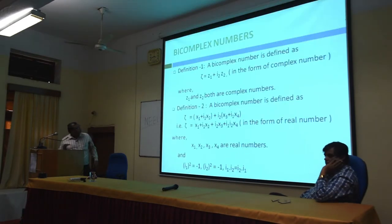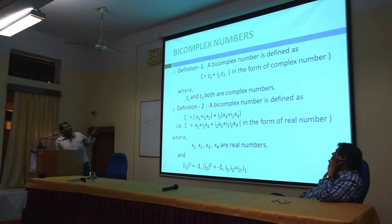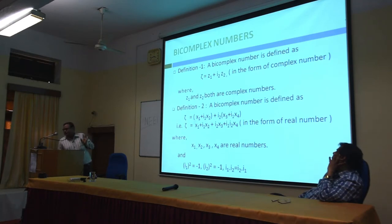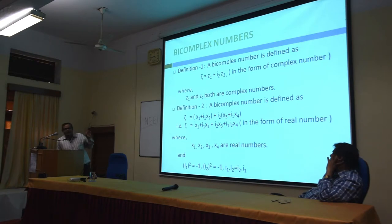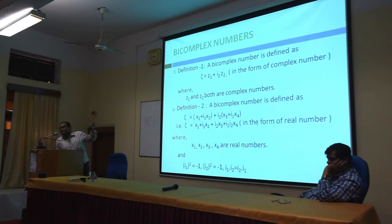We now reach the bi-complex number. A bi-complex number is defined as ζ = z₁ + i₂z₂, where the representation is similar to a complex number. In the case of complex number z = x + iy, x and y are real. But in the case of a bi-complex number, z₁ and z₂ are both complex numbers. This is the representation of a bi-complex number in terms of complex numbers.